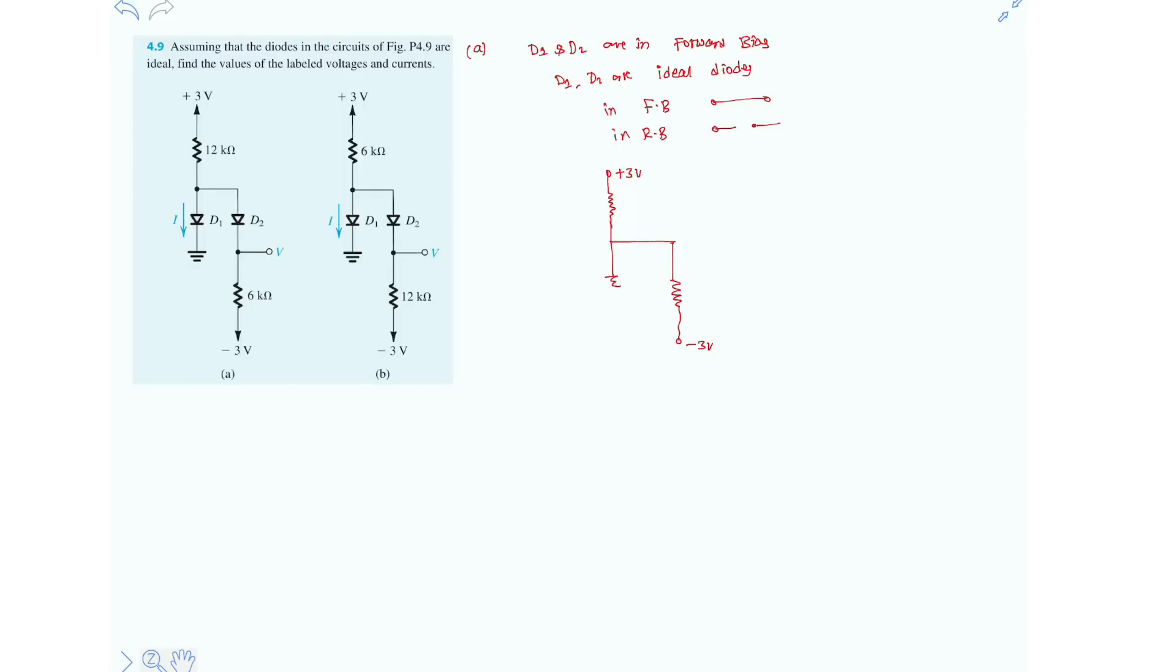So clearly the voltage V is zero because D1 is a short circuit and D2 is short circuit and D1 is directly connected to ground. So V is zero now. So this is current I, this is 12kΩ resistor, this is 6kΩ resistor.